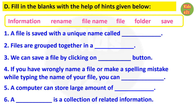Kids need to fill the blanks with the words given in the help box. Number 1: a file is saved with a unique name called — answer is file name. Question 2: files are grouped together in a — answer is folder. Question 3: we can save a file by clicking on — answer is save button.